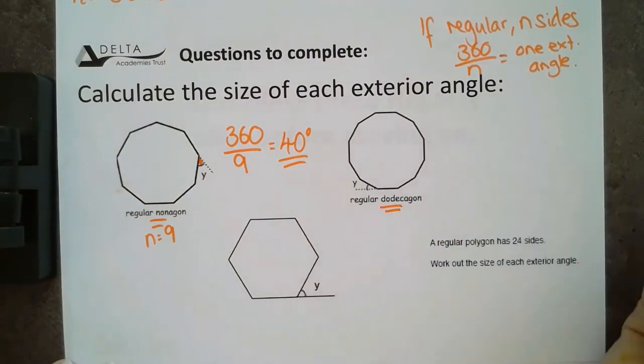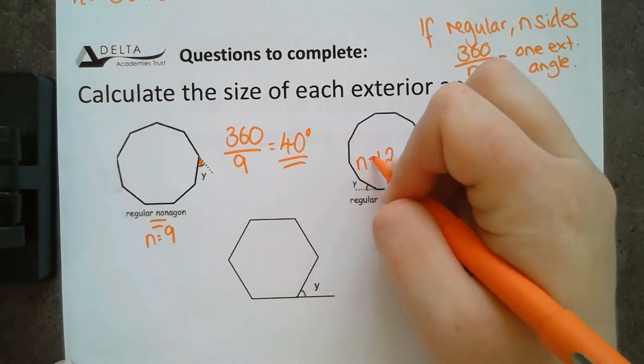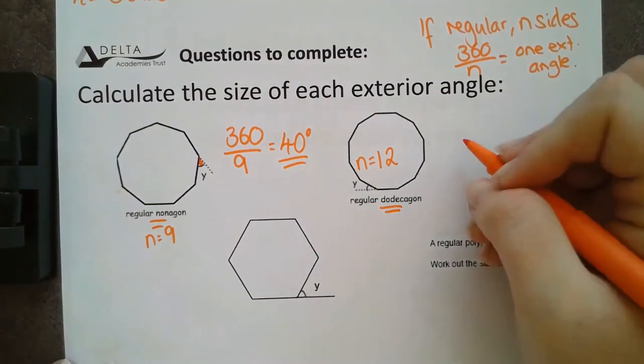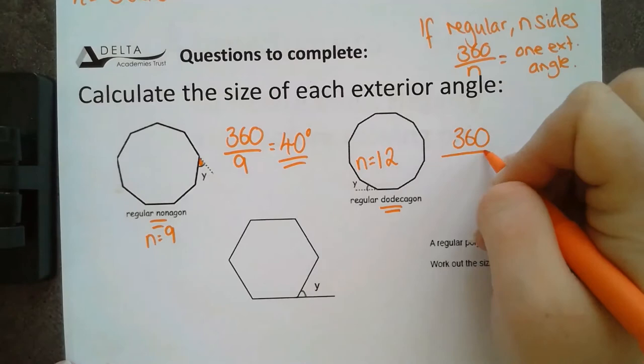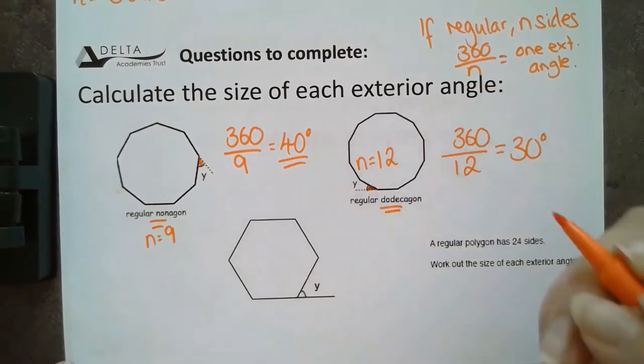A dodecagon, we talked about briefly earlier on. This is a 12-sided shape. So, N is 12. So, we're going to do 360 divided by 12 to get us 30 degrees for this angle here.